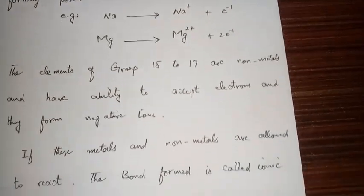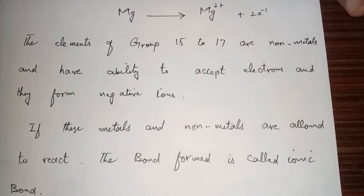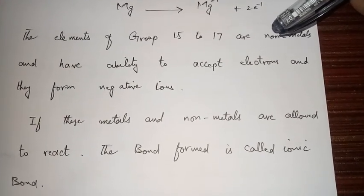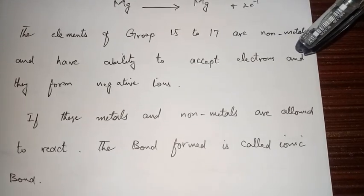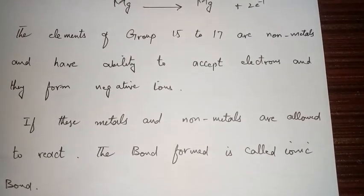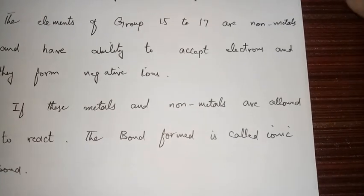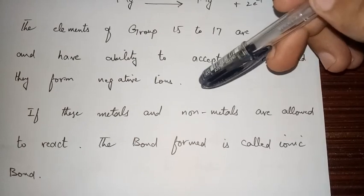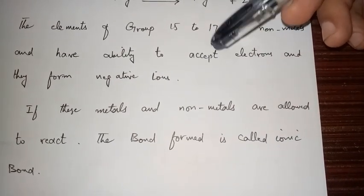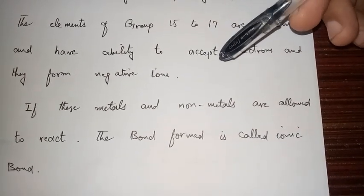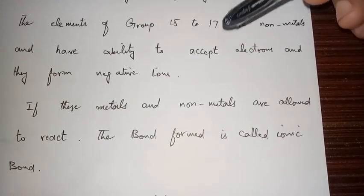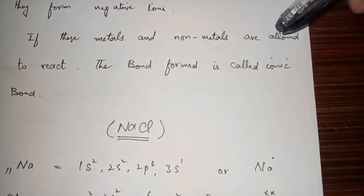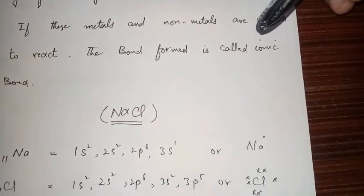On the other hand, the elements of Group 15 and Group 17 are non-metals and have the ability to accept electrons, forming negative ions. They have greater electron affinity than metals, so they prefer to accept electrons to complete their octet — having seven, six, or five electrons in their outermost shell. When metals and non-metals are allowed to react, the bond formed is called an ionic bond.